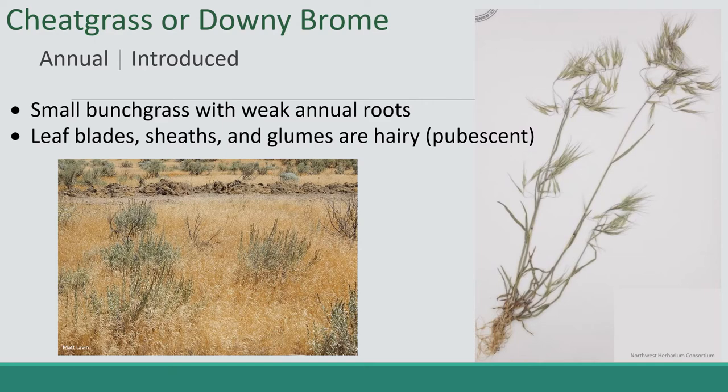The first one is probably familiar — cheatgrass, also called downy brome. It's an annual introduced plant, and one of the most destructive things about it is that it forms a really effective fuel bed. In this picture you'll see a yellow color, which is when the cheatgrass gets really dried out. It forms a uniform bed underneath the sagebrush and becomes really good fuel, which is the most challenging thing about cheatgrass.